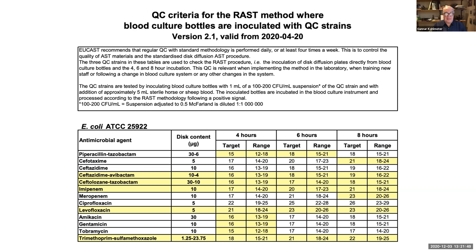QC recommendations are available for three strains. The procedure involves inoculating the blood culture bottle, incubating, waiting for the positive signal, then plating the bottle in the same way as clinical bottles. Zones are read at four, six, and eight hours, with a target and range defined for each time point. Some entries highlighted in yellow are recent additions from the current year. The menu of agents for E. coli is fairly wide, though ampicillin and amoxicillin-clavulanate are not included — those in the table were jointly agreed by the steering committee as the most relevant agents for septicemia treatment.